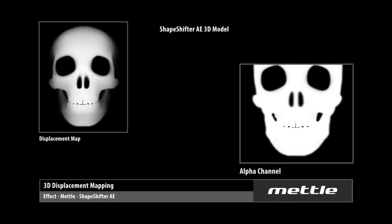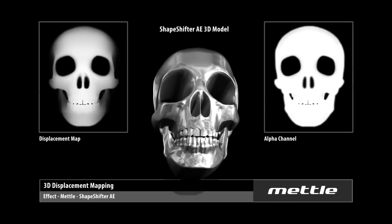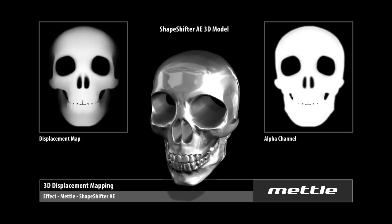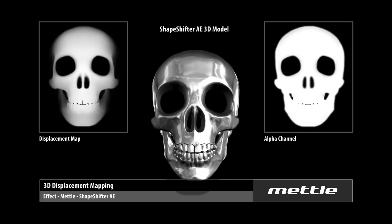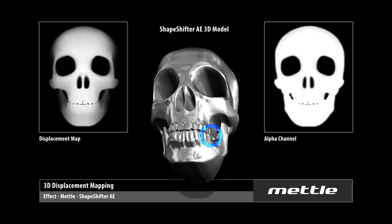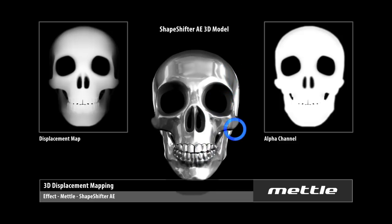Next is the skull. The displacement map was created in Photoshop as well. If you have access to a 3D program, you can also use a depth map to create a grayscale image. This can then be imported into After Effects and used as a displacement map. Take a look at the jaw — there's quite a bit of detail in the displacement map as you can see in the rendered skull. We're using the alpha channel to determine the boundary of the geometry, which helps to shape the skull.